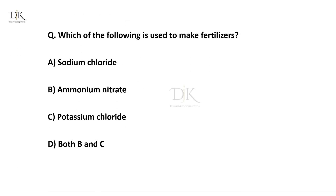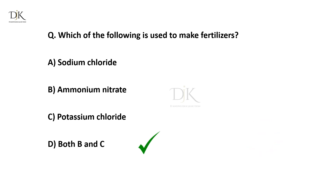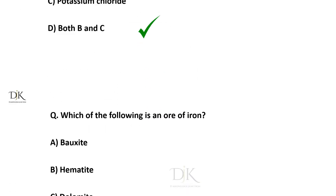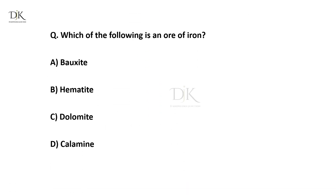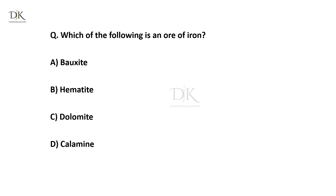Which of the following is used to make fertilizers? The right answer is both B and C. Which of the following is an ore of iron? The right answer is hematite.